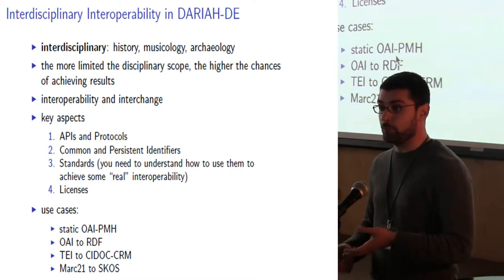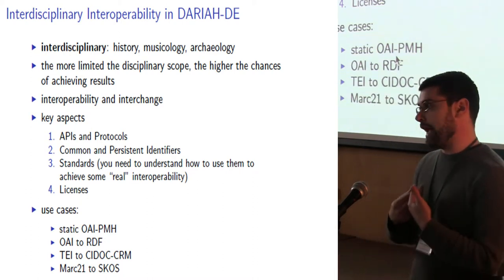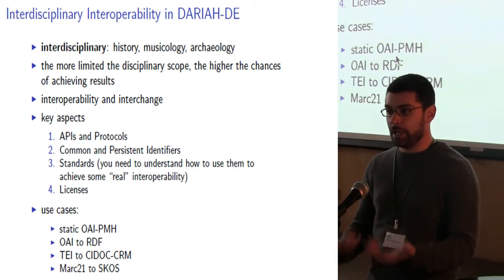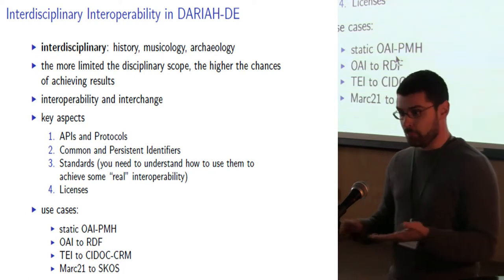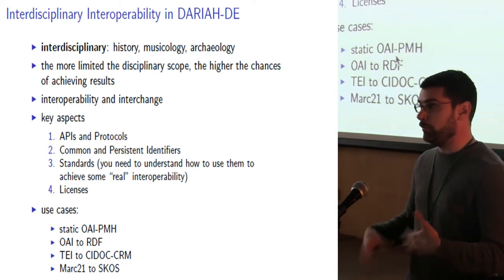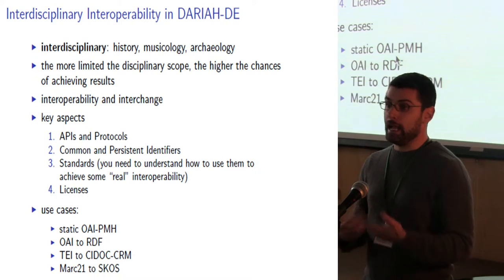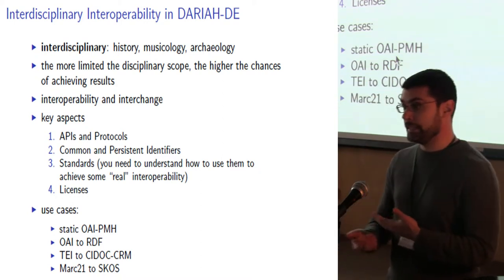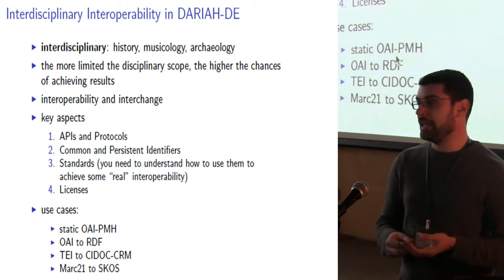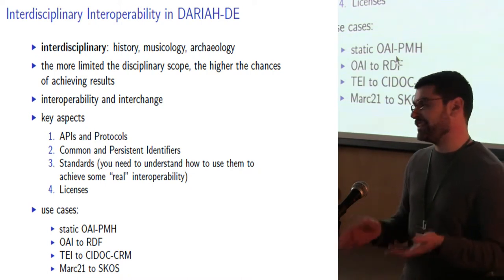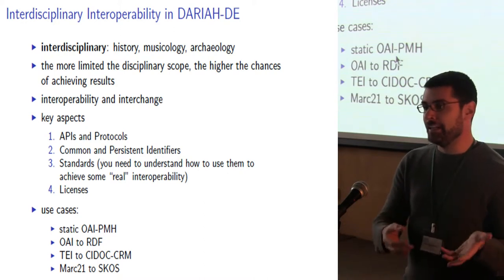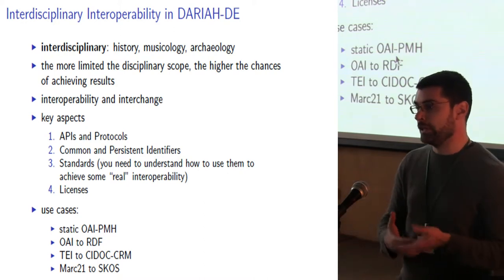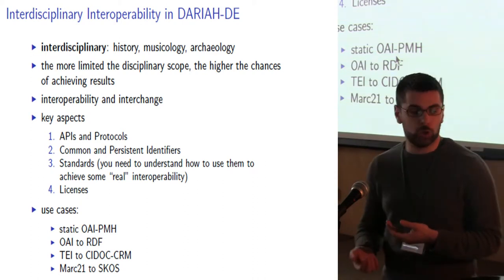We looked at some key aspects. The first one is APIs and protocols. As a minimum standard for an API, we recommended OAI-PMH — as a really bottom-up kind of API to allow access to a collection of resources, talking to the collection, downloading the data — all of this without needing the classical workflow of emailing someone or phoning someone asking for the data. So trying to have a more automated workflow.